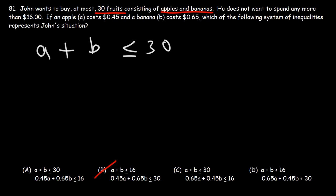So right now we could eliminate answer choice B. A plus B shouldn't be up to 16, that's not it. And we could eliminate answer choice D. So we're between A and C right now.